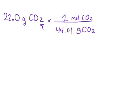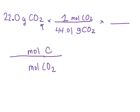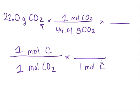Continuing down this line: on the bottom we have moles of CO2, and on the top we want moles of carbon. How many carbons are in CO2? There's just one, because the subscript on carbon is one. So in one mole of CO2, we have one mole of carbon. And from our periodic table, in one mole of carbon there is 12.01 grams of carbon.